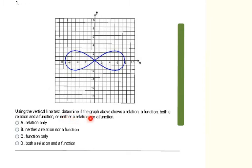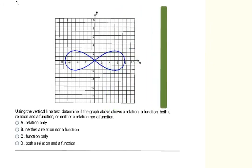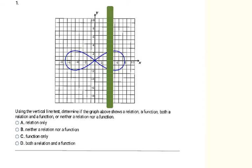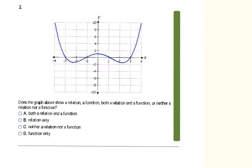Using the vertical line test, determine if the graph shows a relation, a function, both a relation and a function, or neither. I'll use the vertical line test — some call it a pencil test because you can lay a pencil vertically to see if it's a function. If the vertical line touches the graph two or more times, it's not a function. Here, placing the line on the graph, it touches the blue graph in two spots, so it's not a function — it's just a relation. The answer is A.